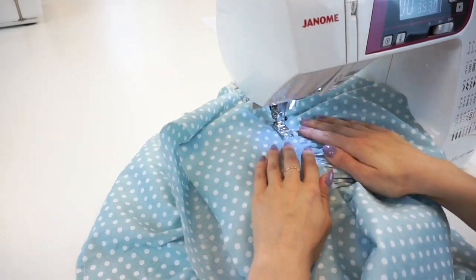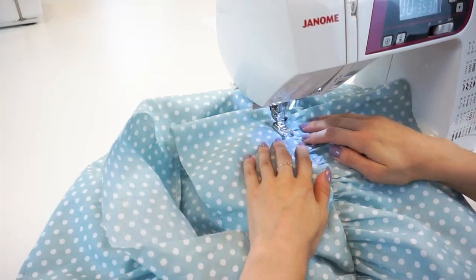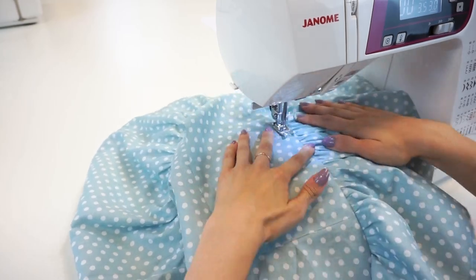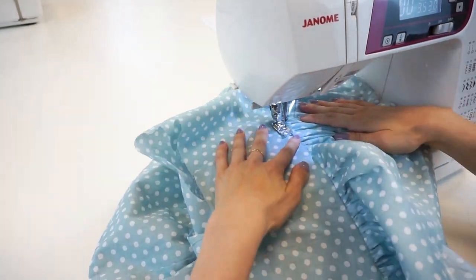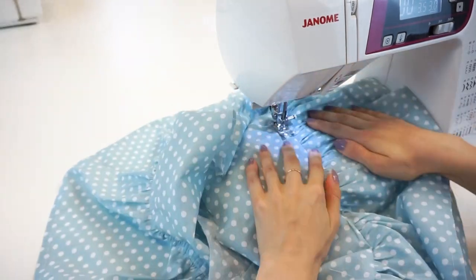This time I chose to topstitch the seam upwards because I felt that these frills are already dramatic enough and that's why I didn't want them to be more fluffy.